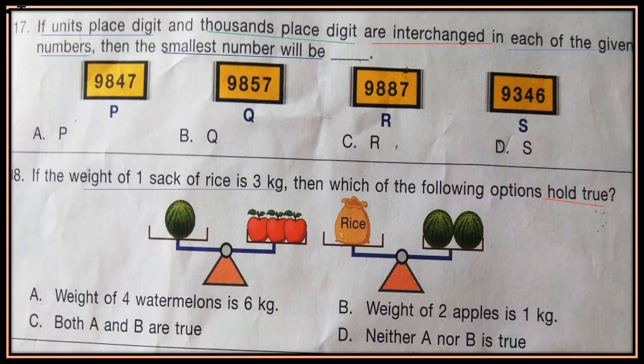Question 17: If units place digit and thousands place digit are interchanged in each of the given numbers, then the smallest number will be. See the numbers P, Q, R, S — interchange the units place digit and thousands place digit in each number, then find the smallest number after interchanging.